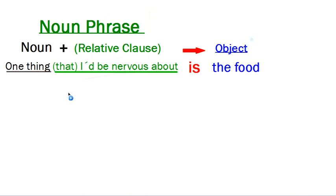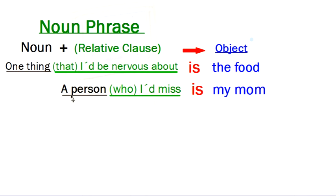Let's look at another example. This one says, A person who I'd miss is my mom. Again, here's my noun, a person. And here's my relative clause to describe which person or what type of person. So, a person who I'd miss. And again, who is optional. So, a person who I'd miss is my mom. And the object is my mom. Very good.